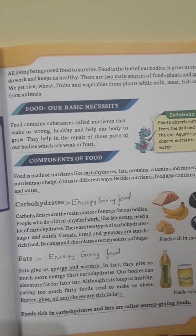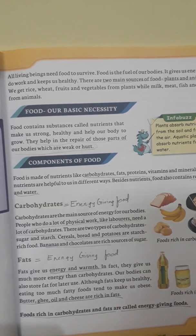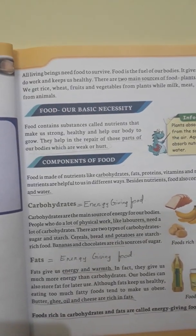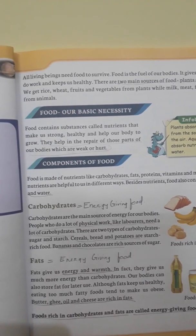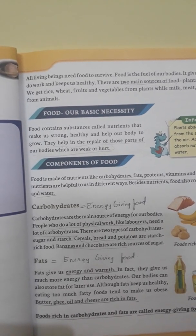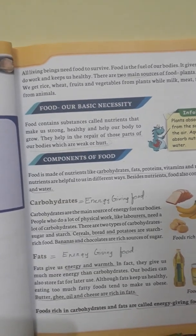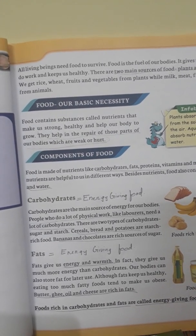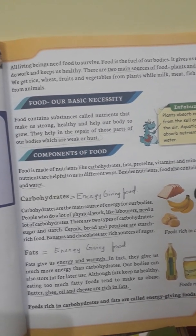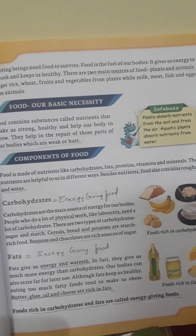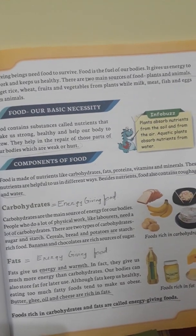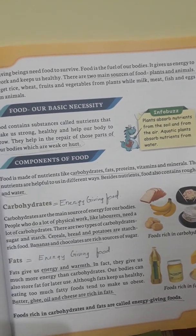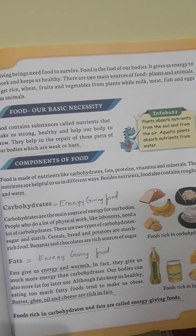Coming to the first key point: food, our basic necessity. The food we eat contains different substances that we need to grow and remain healthy — these are called nutrients. They help in the repair of those parts of our bodies which are weak. Plants absorb nutrients from the soil and from the air, while aquatic plants absorb nutrients from water.